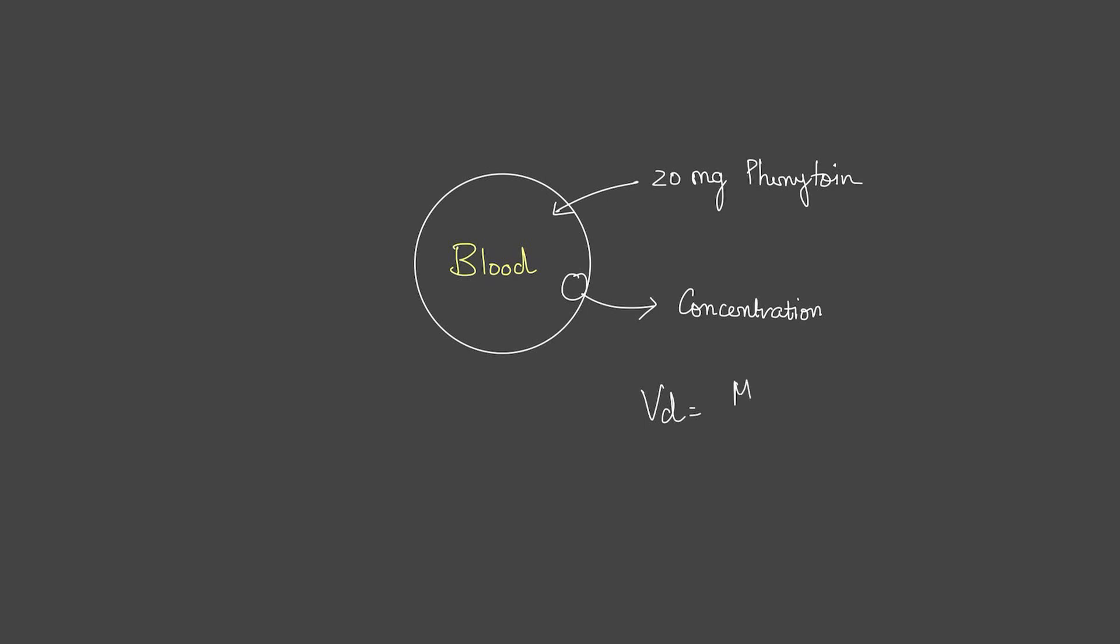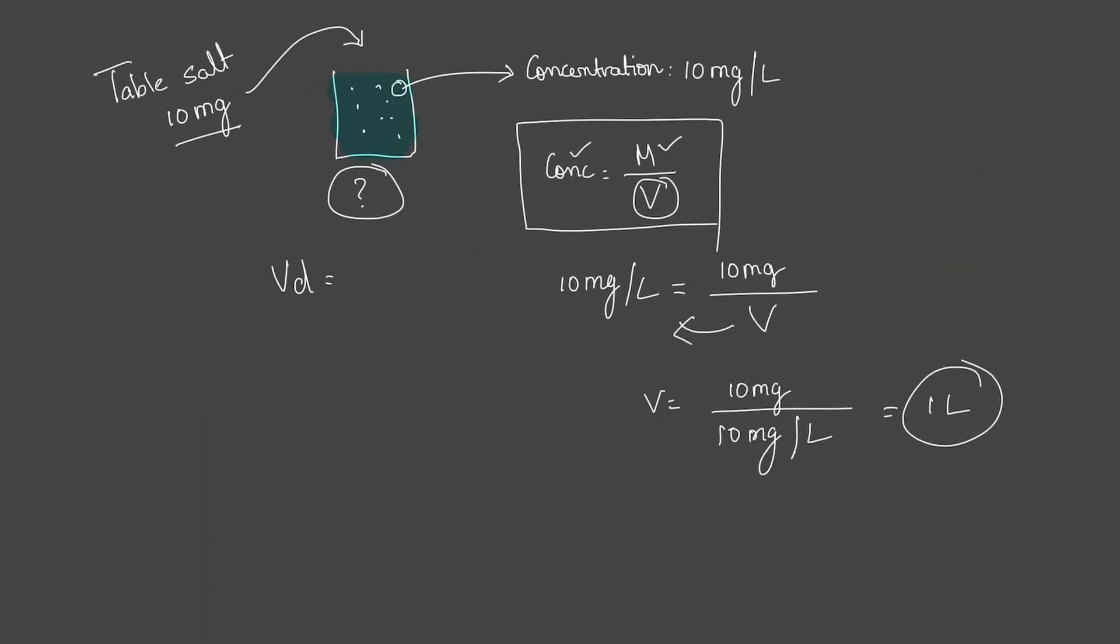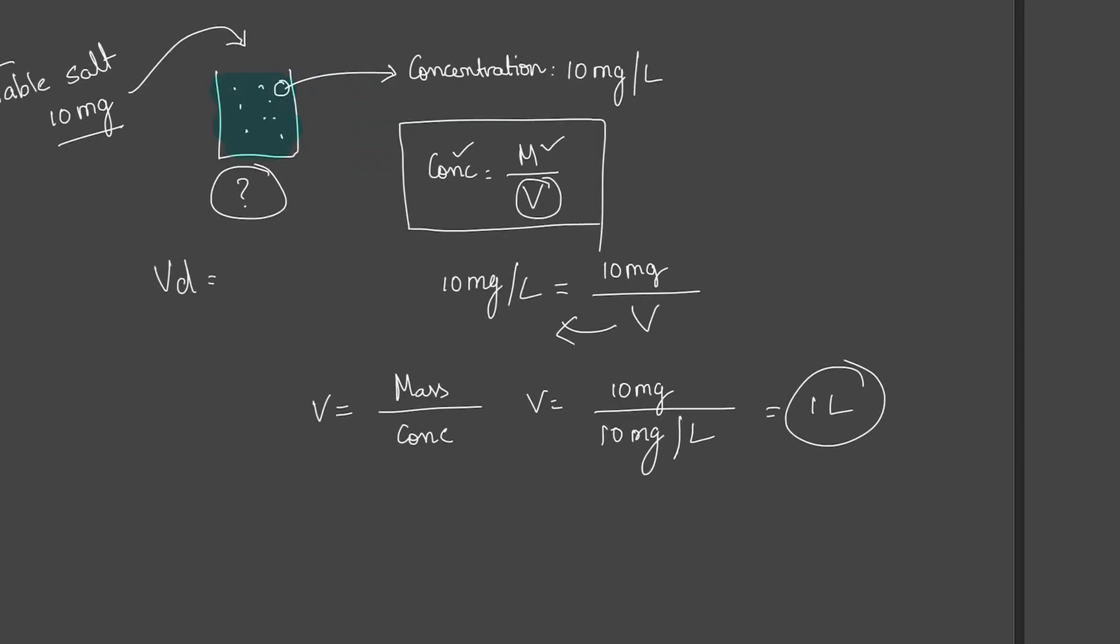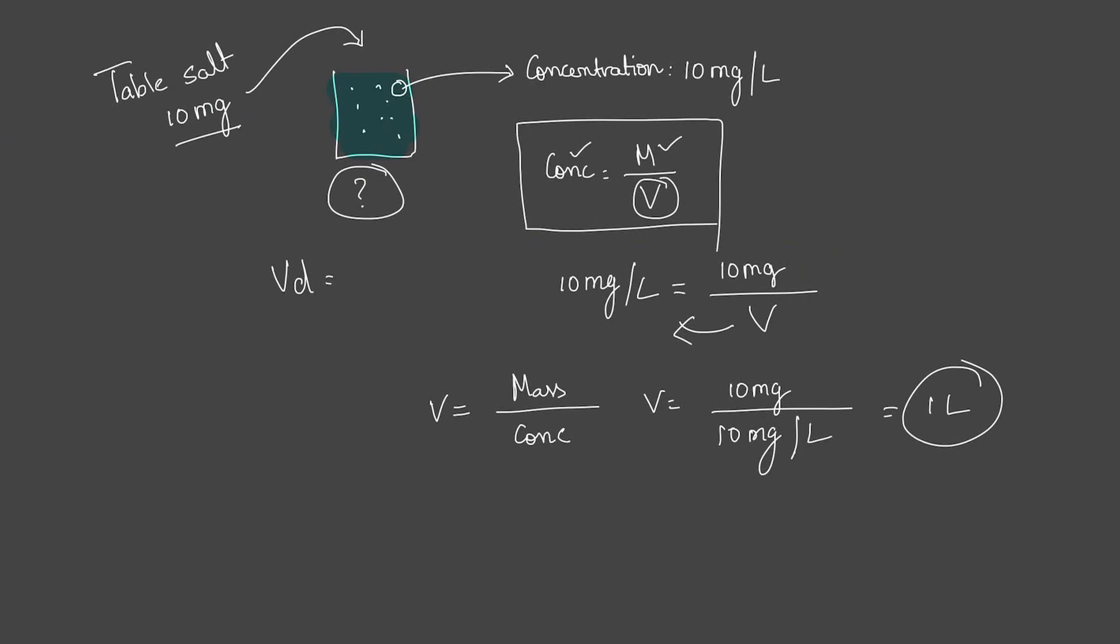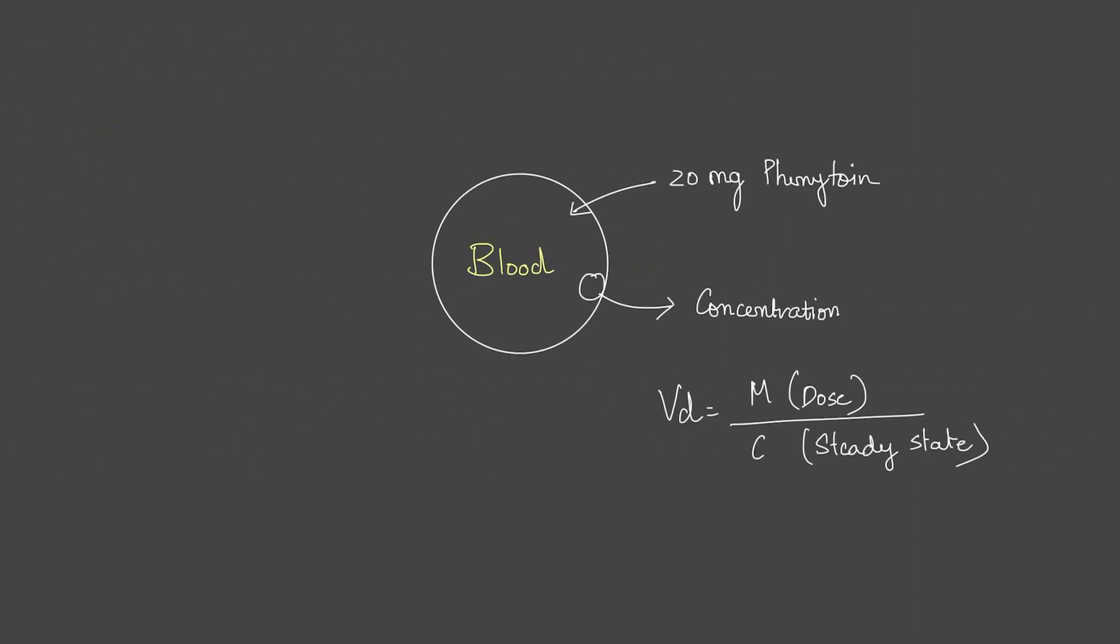So the volume of distribution would be—we just saw it—I can write this like this: volume of distribution is mass by concentration. This mass refers to the dose, and concentration refers to the steady state concentration. So mass which is the dose, and concentration which is the steady state. Don't worry about the steady state. It basically is similar to what I discussed here. You are stirring it completely, and steady state is the state where a kind of equilibrium has been reached for now.